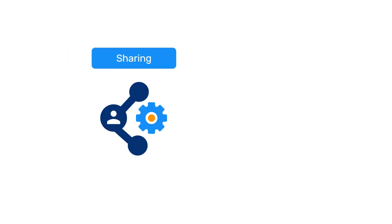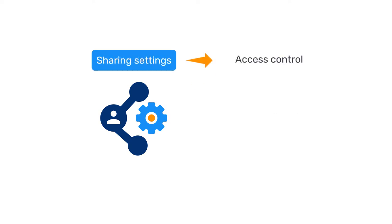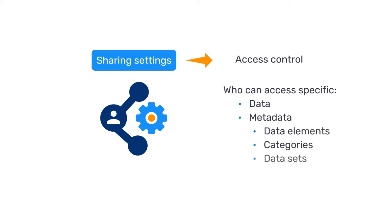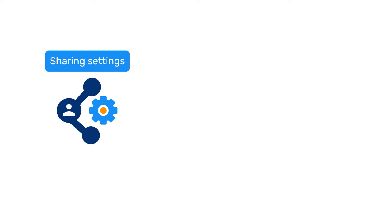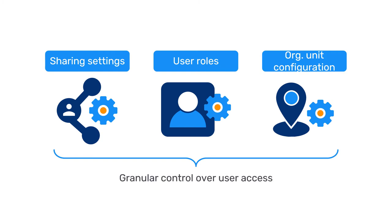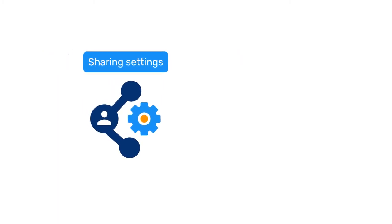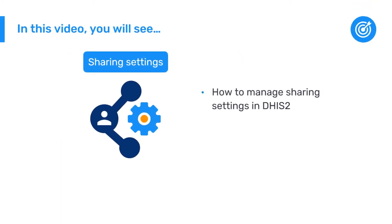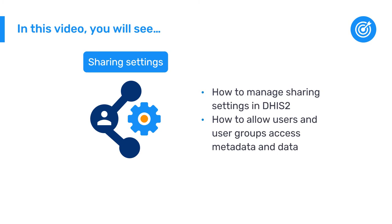In DHIS2, the concept of sharing relates to access control. Through sharing settings, you can control who can access specific data or metadata objects such as data elements, categories, and data sets. In this video, you will learn how to manage sharing settings in DHIS2 — specifically, how you can allow different users and user groups to access metadata and data in your system.